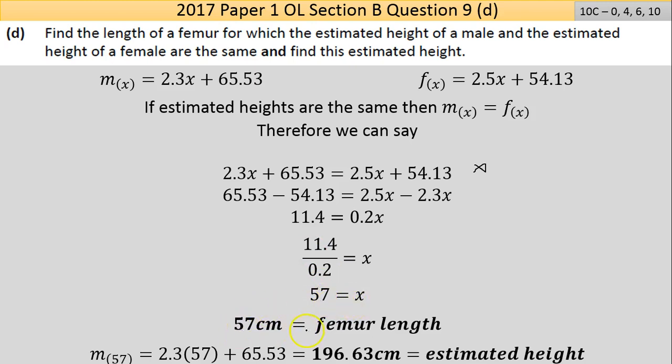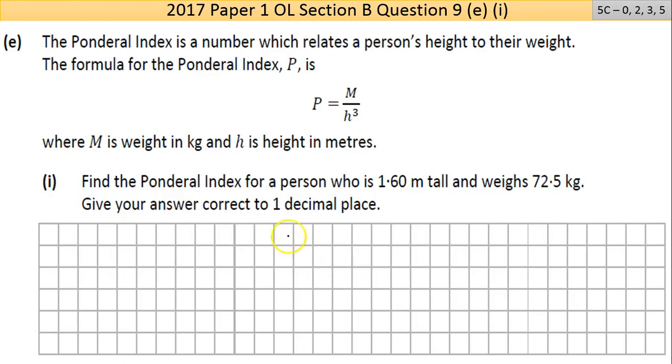Now find the estimated height of the person. I'm using the male function here, and when I put 57 into the male function I get 196.63 centimeters as the estimated height. I should get the same answer if I use the female function.